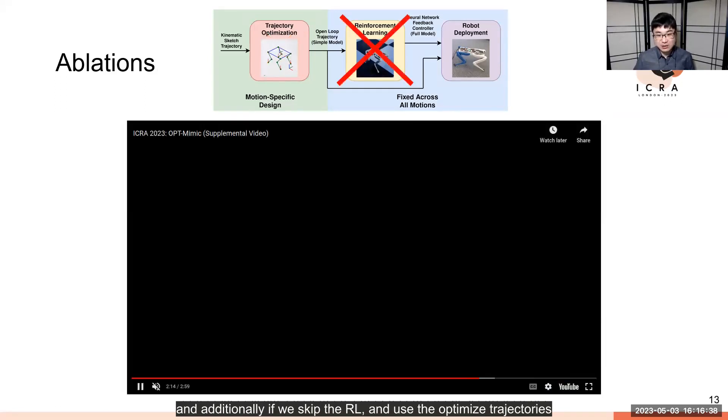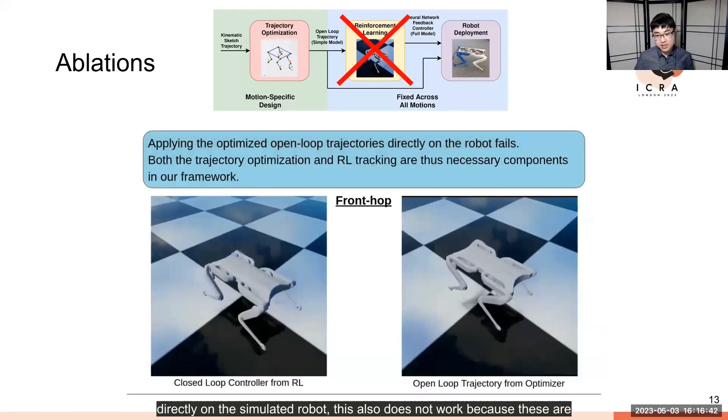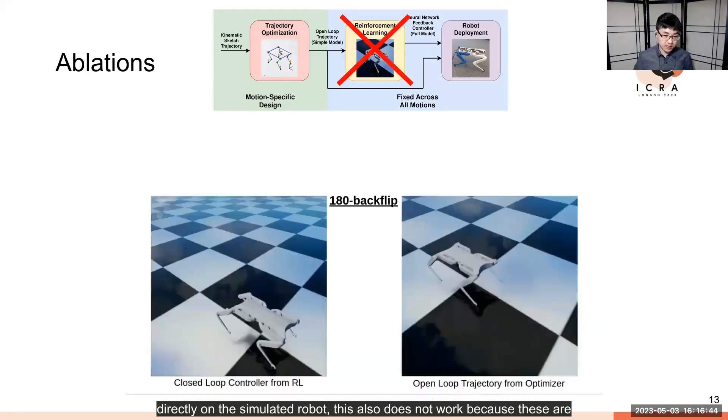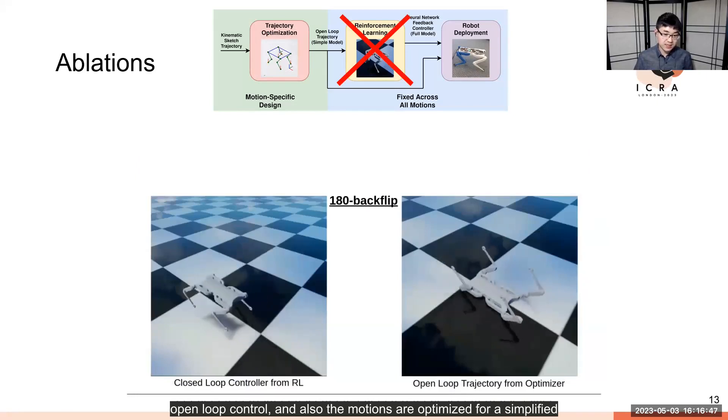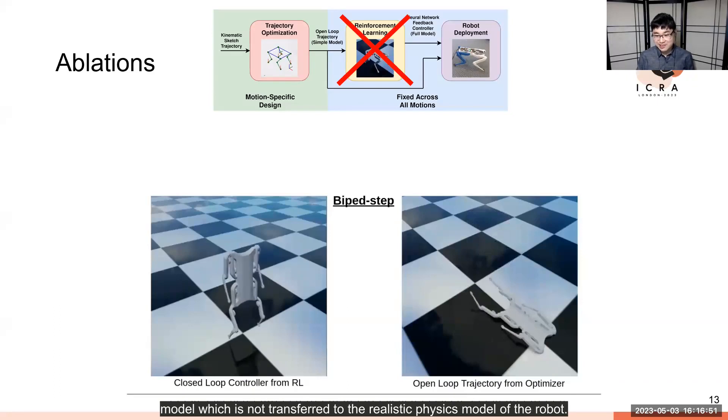Additionally, if we skip the RL and use the optimized trajectories directly on the simulated robot, this also does not work because these are open-loop control and the motions are optimized for a simplified model which does not transfer to the realistic physics model of the robot.